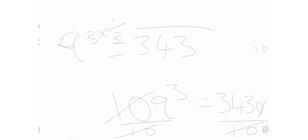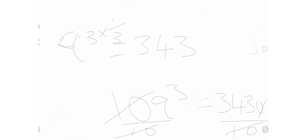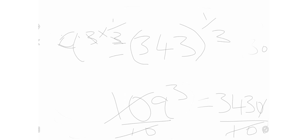To solve for a, we raise both sides to the power of one over three. The power of three and one over three cancel each other, so we are left with a equals 343 raised to the power of one over three, which means find the cube root of 343.